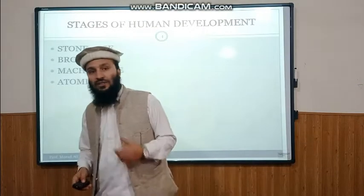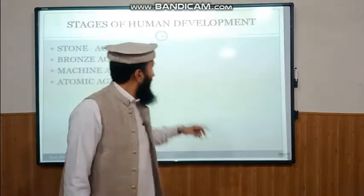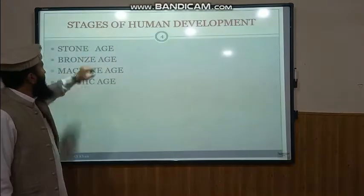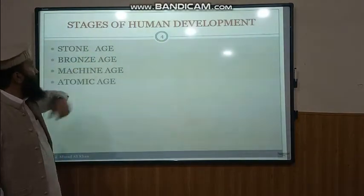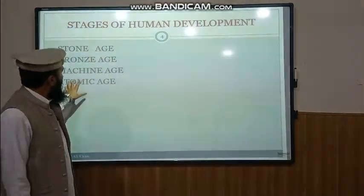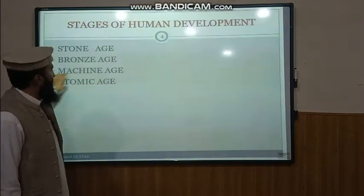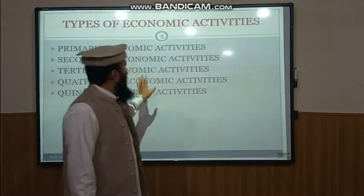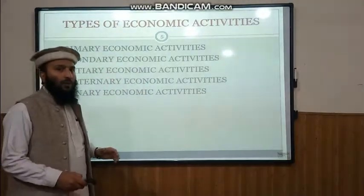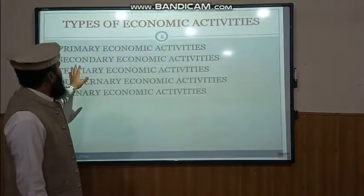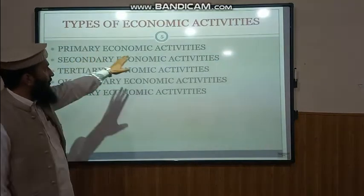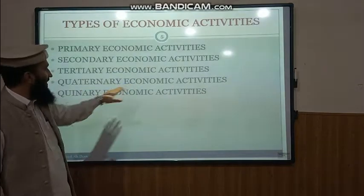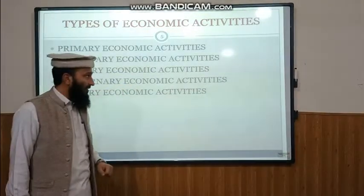Today we are having those activities which started in Stone Age, Bronze Age, Machine Age, and all these activities are present now in this Atomic Age. We divide all the Economic Activities of the world into five categories: Primary Economic Activities, Secondary Economic Activities, Tertiary Economic Activities, and Quaternary and Quinary Economic Activities.